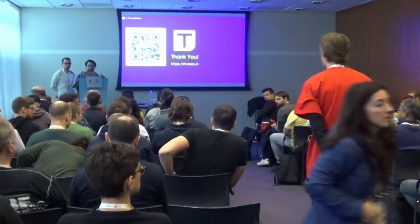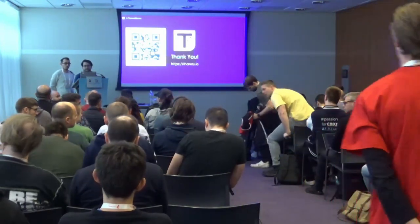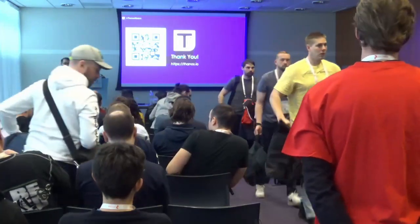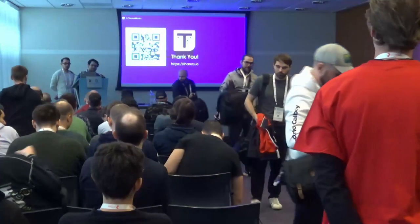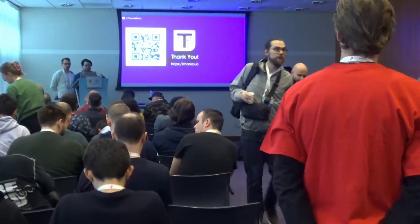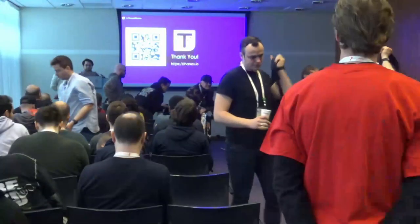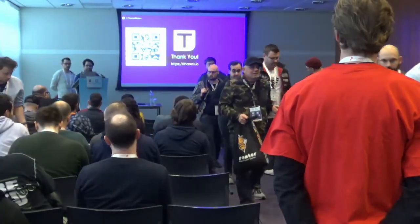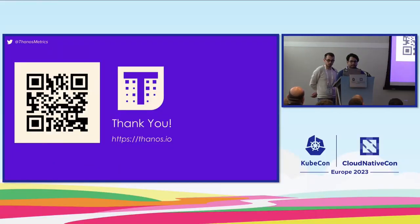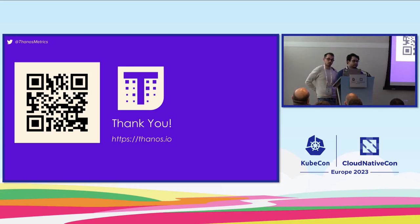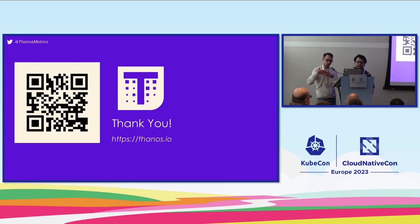Question: If all Prometheus instances are down, can we still use Thanos with storage only? And what is the order for a request — do we request from storage first or from the Thanos sidecars? Answer: If all Prometheus instances are down, you can still query data from object storage. We usually request data from the sidecars, which then talk to the Prometheus instances, so both the sidecar and Prometheus are on the same query path. Data is requested in parallel from the sidecar and from object storage, and it's joined together at query time.